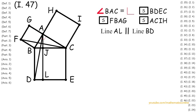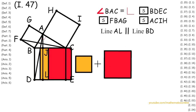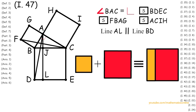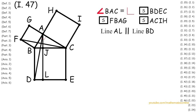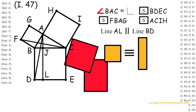The way Euclid proves the Pythagorean Theorem is by proving that the areas of the two smaller squares are congruent to the areas of the corresponding parallelograms that make up the larger square. If we can show that this is true, then we can prove the Pythagorean Theorem. So there are two sides to this proof: we must prove that the square on the left is congruent to the bottom left parallelogram, and the square on the right is congruent to the bottom right parallelogram.